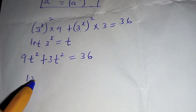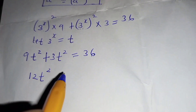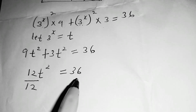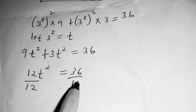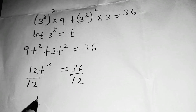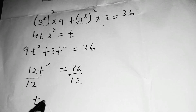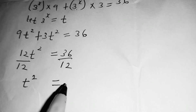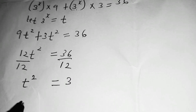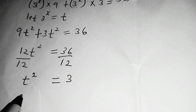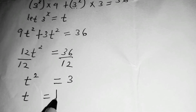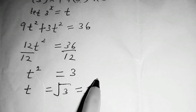So it is 3t squared, which is equal to 36. We collect the like terms together: 9t squared plus 3t squared is 12t squared, which is equal to 36. Dividing both sides by 12, we are left with t squared equal to 36 divided by 12, which is 3. Taking the square root of both sides, t equals root 3, which can be written as 3 to the power of one half.